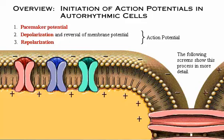Here's an overview of the initiation of action potentials in an autorhythmic cell. An autorhythmic cell has the unique ability to depolarize spontaneously, resulting in a pacemaker potential. Once threshold is reached, an action potential is initiated, which begins with further depolarization and leads to reversal of the membrane potential. Then repolarization occurs, returning the cell to its resting membrane potential. The cell spontaneously begins to slowly depolarize once again, and the sequence is repeated.